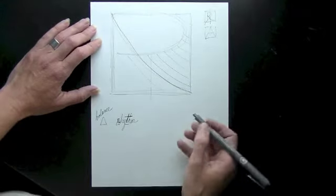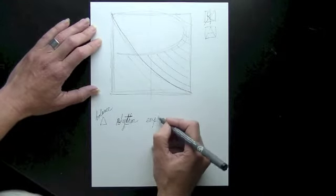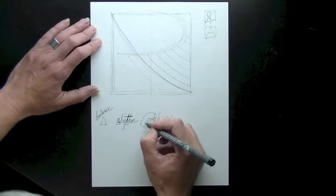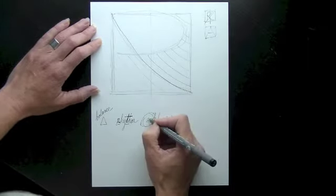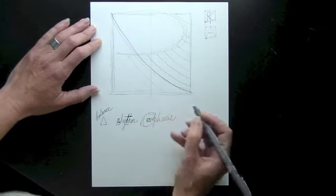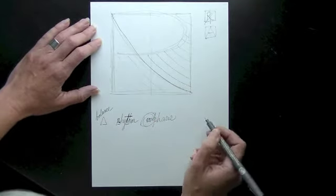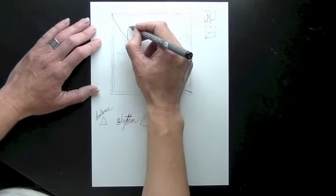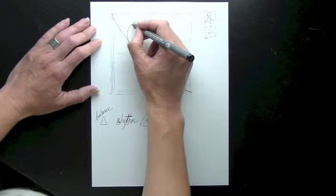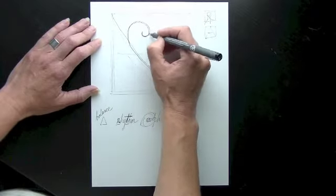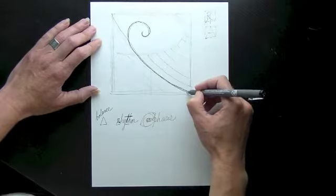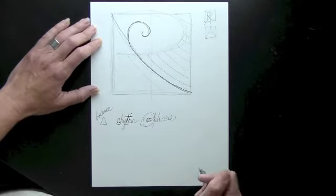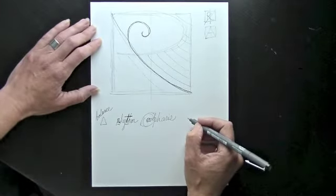All right, so now let's look at the next principle of design is emphasis. In other words, where does your eye go first? And there isn't really a place that my eye goes first. So what I would like to do is use that ammonite curve and create my own golden ratio spiral. And this is where your eye goes first, and that's an artistic choice that I'm going to make. What artistic choices are you going to make?